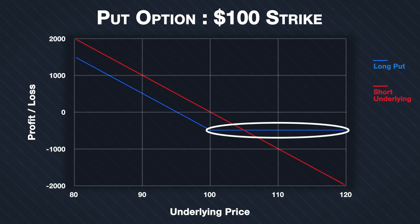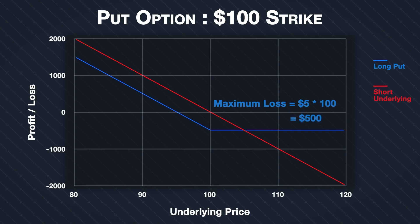Even if the price goes significantly higher to say $300 per share, the loss is still only $500. Compare that to the $20,000 potential loss of shorting the stock with price moving to $300, and it's a clear advantage for the put option.